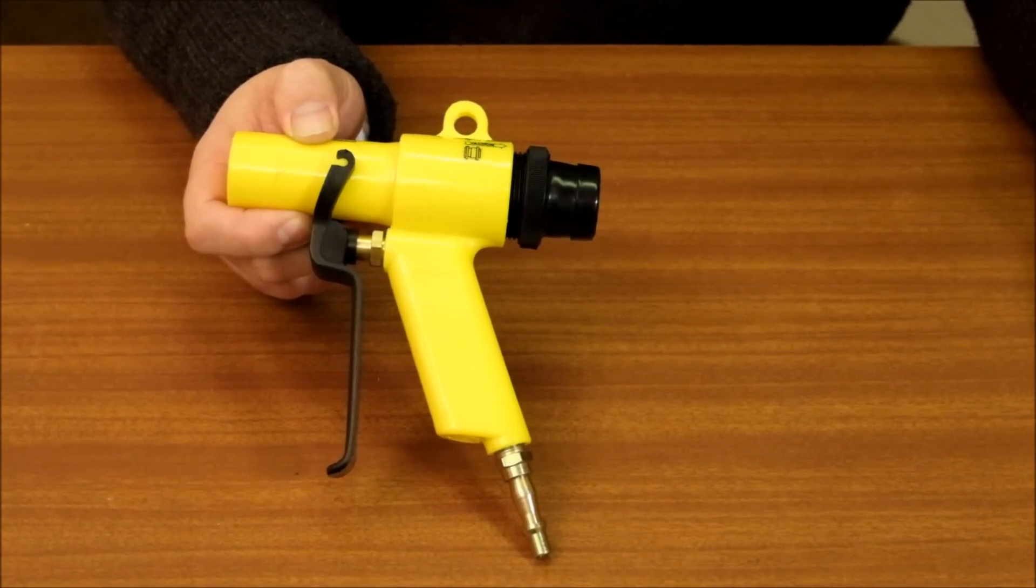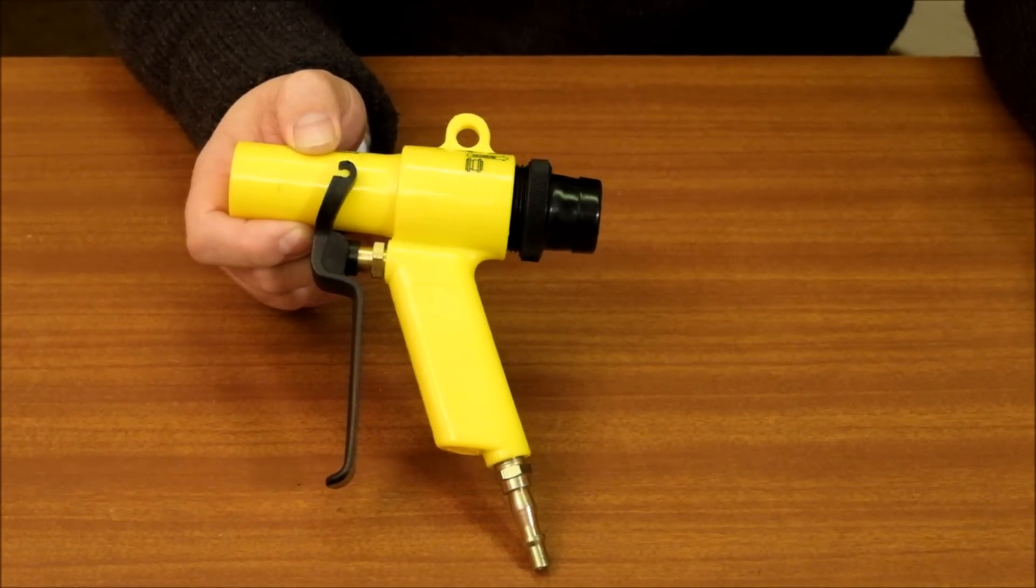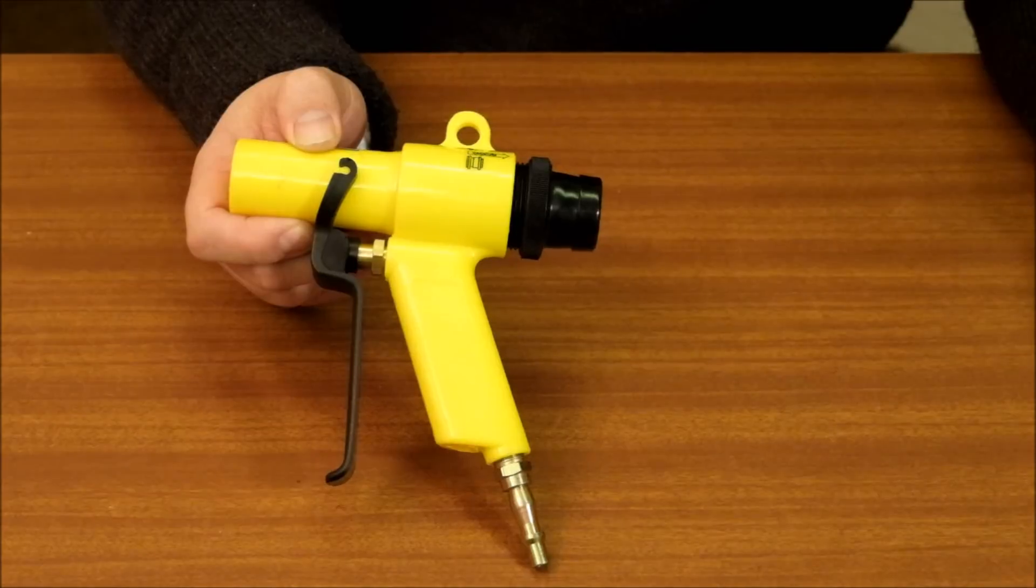Whether you want to blow down dust or suck up swarf, the air-clearing gun is ideal for the job. The gun has no moving parts and works from compressed air only.